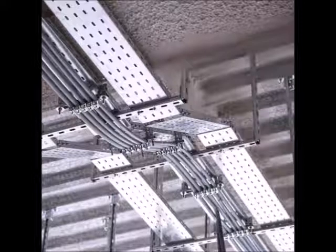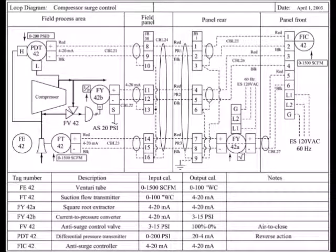That brings us to the end of part 1. See you in part 2 where we will dive into the PLC deeper. We have looked at the loop diagram from the field to the PLC panel. Now let's look at the PLC panel itself.